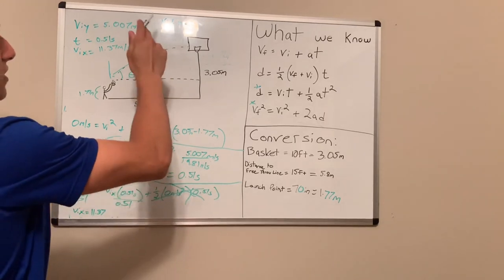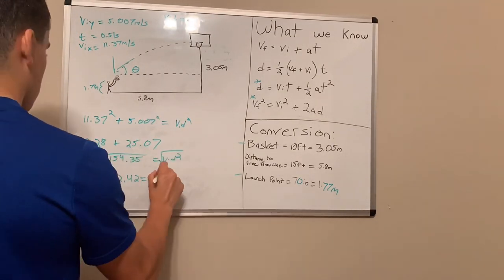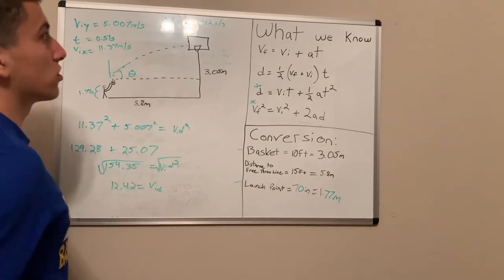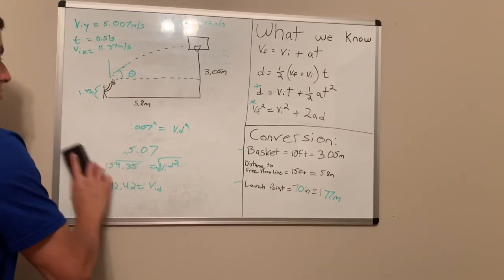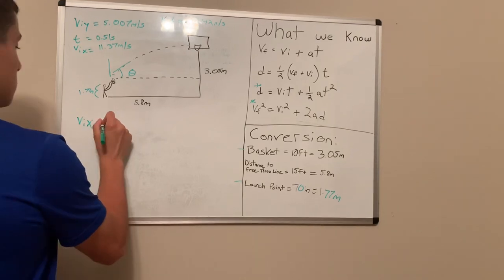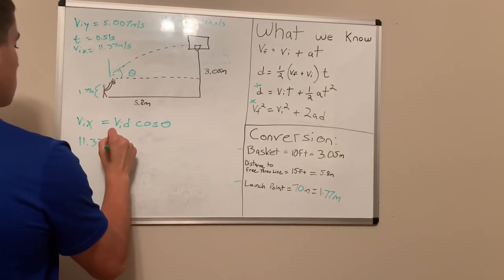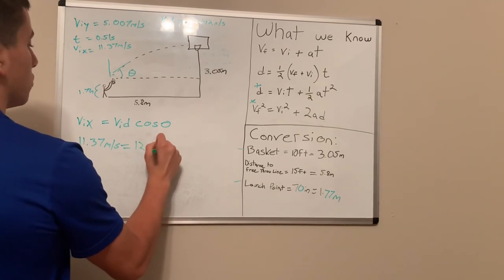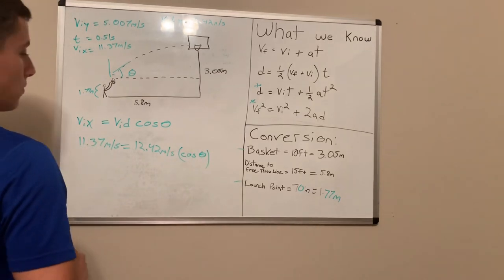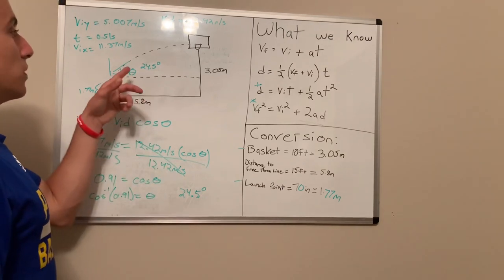I will now find the velocity in the diagonal direction using the Pythagorean theorem. The velocity in the diagonal direction comes out to 12.42 meters per second. Using the same equation V_ix = V_id · cos(θ): 11.37 m/s equals 12.42 m/s times cosine of theta. After doing the math, I found that the angle theta is 24.5 degrees.